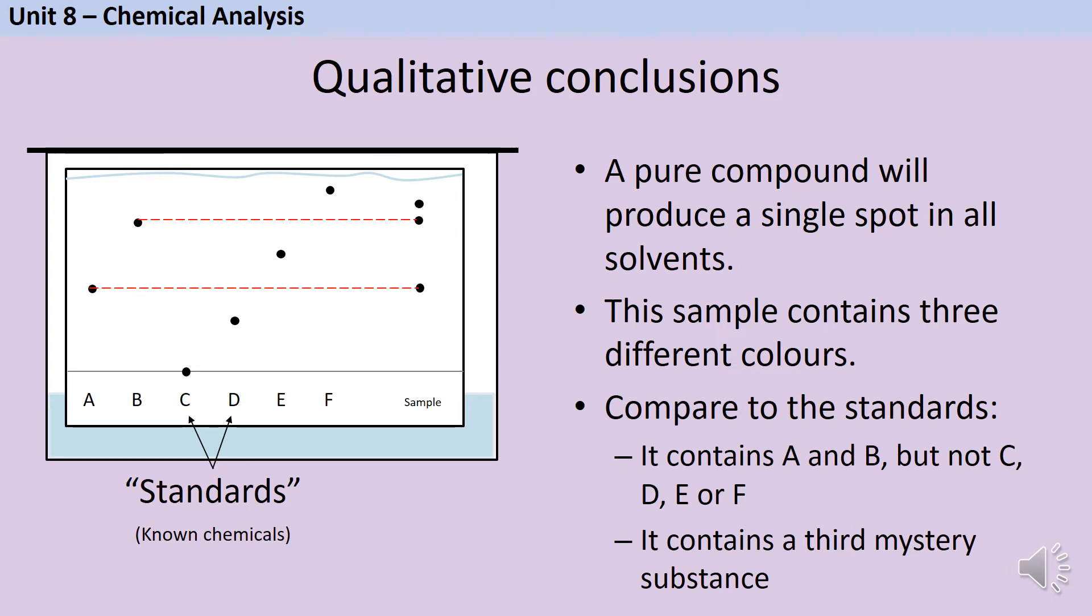And it's probably worth pointing out here that although we do use paper chromatography to separate out colors, your exam paper is going to be printed in black and white. So when they ask you how many different colors does the sample contain, what they're asking you to look at is how many different spots are there. So this sample here contains three colors even though all of the colors on my paper are black. There are three dots so there are three colors.